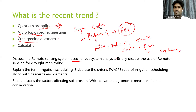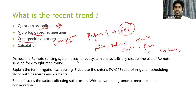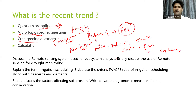Crop-specific questions can also be expected in irrigation — for example, irrigation scheduling for a particular crop plant — and in nutrient management. So apart from covering the POP (Package of Practices) for various crop plants, we need to prepare crop-specific questions for weed management, irrigation, and nutrient management. In the forestry area, tree-specific questions are also possible, such as on neem, teak, bamboo, and casuarina.